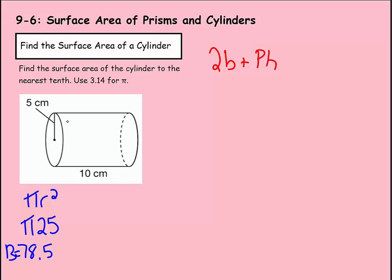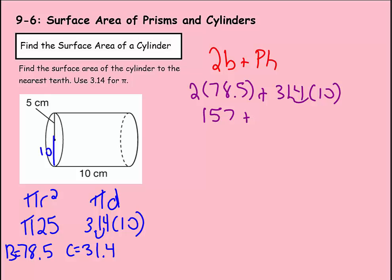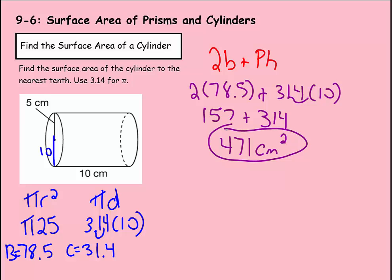The circumference is pi times diameter. Since the radius is 5, the diameter is 10, so 3.14 times 10 gives us 31.4. Rewriting the formula: 2 times 78.5 plus 31.4 times 10. Two times 78.5 is 157, and 31.4 times 10 is 314. So 157 plus 314 gives us a total surface area of 471 centimeters squared.